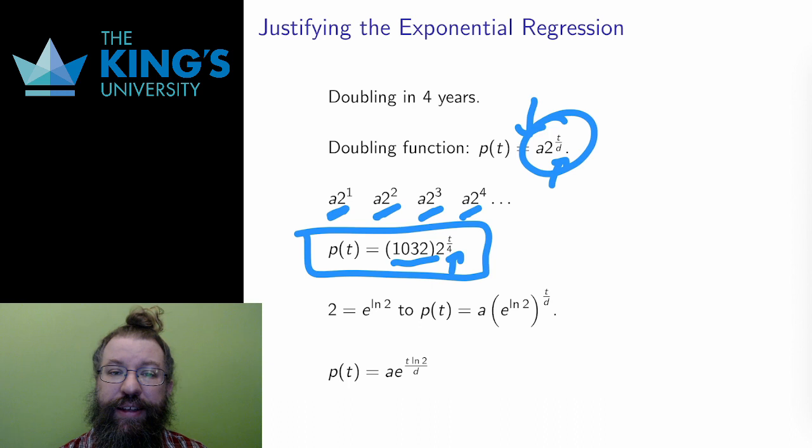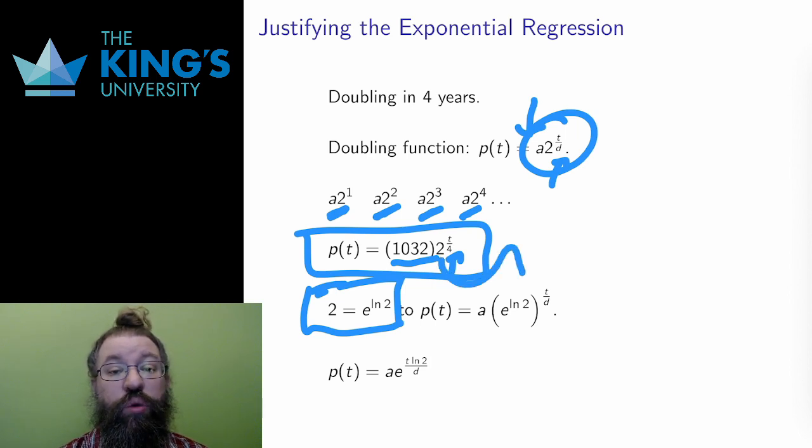As an aside, I mentioned that I would usually use the number e as the exponential base. I can do that here with a couple exponential tricks. I can write 2 as e to the ln 2, since the exponential and the logarithm cancel each other out. They are inverses, after all.